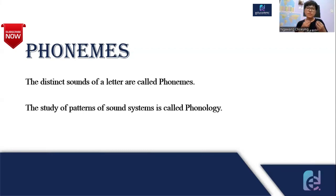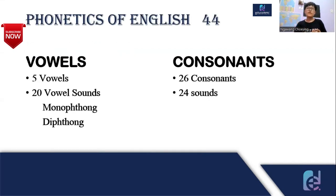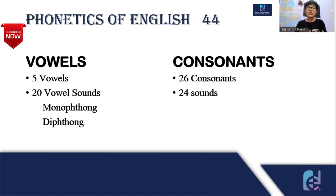Then what is phonology? Phonology is the branch where we study the pattern of the sound system. Now, for the phonetics of English — to learn the basics of a language, we need to learn the consonants and the vowels. We have learned that there are 26 letters, but if we study the phonetics of English, we find that consonants produce 24 sounds.